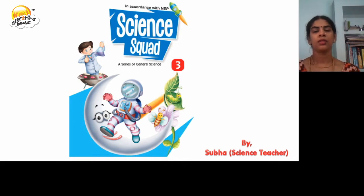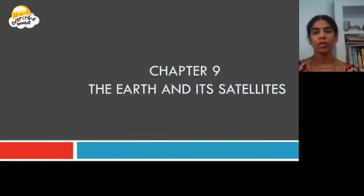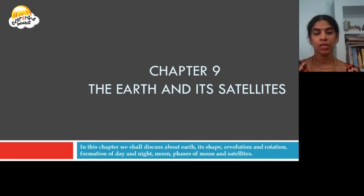Hello students, let us learn general science for class 3 from the book Science Quart. Today we are going to learn chapter 9, The Earth and Its Satellites. In this chapter, we are going to discuss about earth's shape, revolution, rotation, formation of day and night, moon, phases of moon, and satellites.